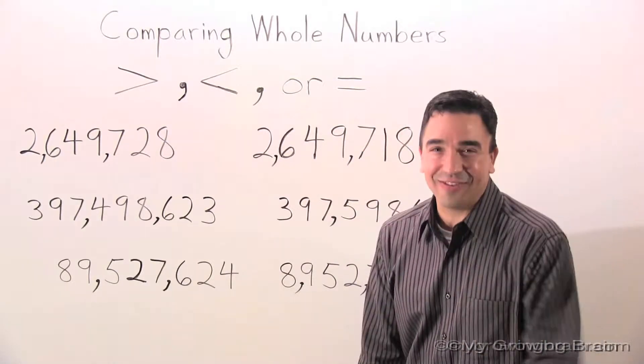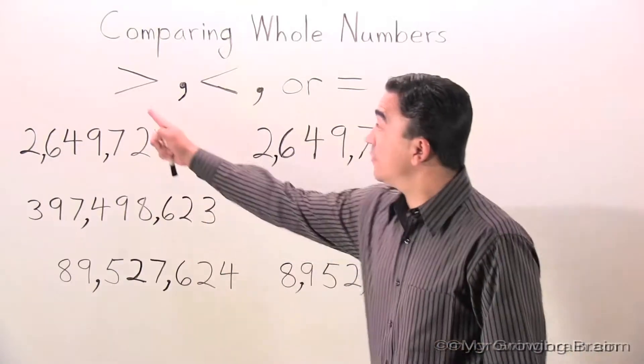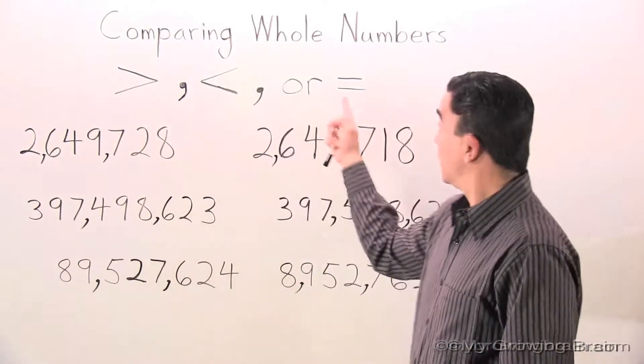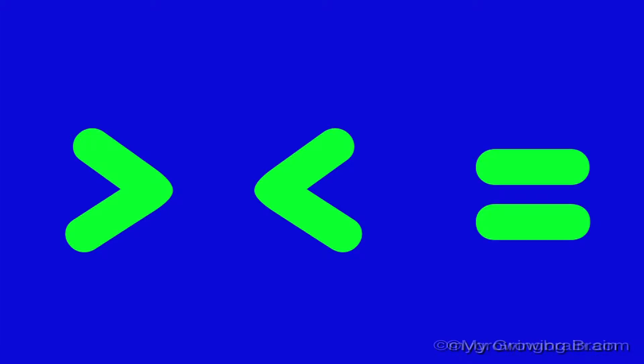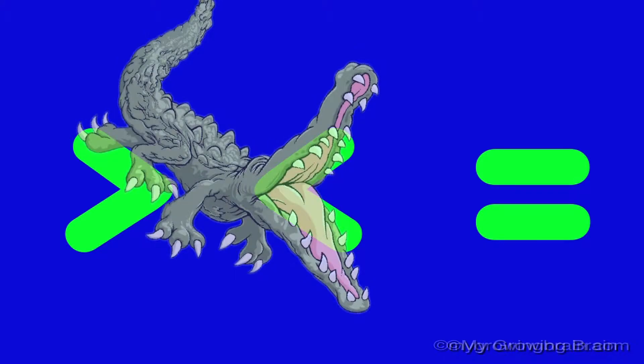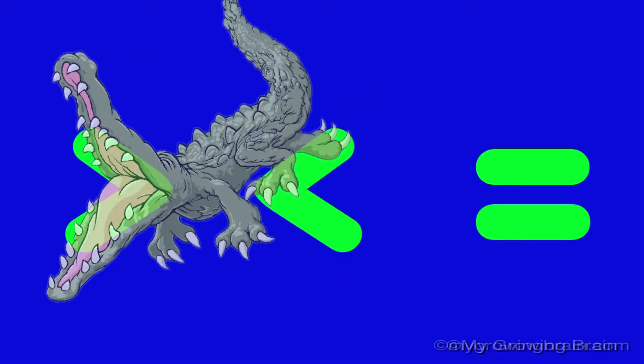Before we get started, I want to remind you about these three symbols. The greater than symbol, the less than symbol, and the equal to symbol. Remember, the alligator always wants to eat the greater number.